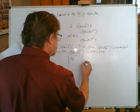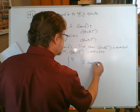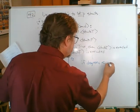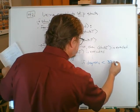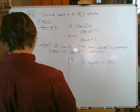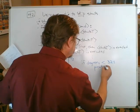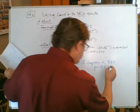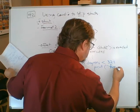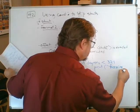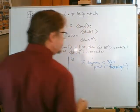If degrees, d-e-g-r-e-e-s, less than 32, colon, indent, print, open parentheses, double quote, freezing. F-r-e-e-z-i-n-g, exclamation point, close double quote, close parentheses.